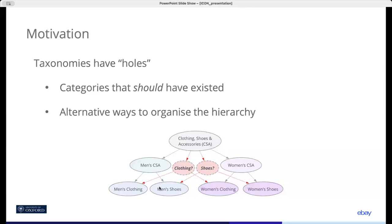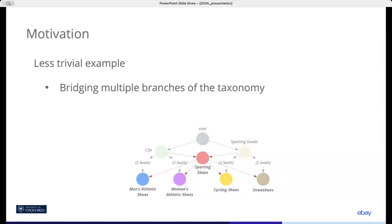This taxonomy is obviously incomplete because we can infer two missing concepts, namely clothing and shoes from this tree structure. And this missing concept can be more profound than the previous example, which is simply reorganizing the hierarchy.